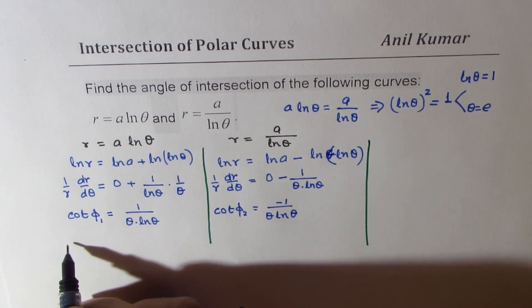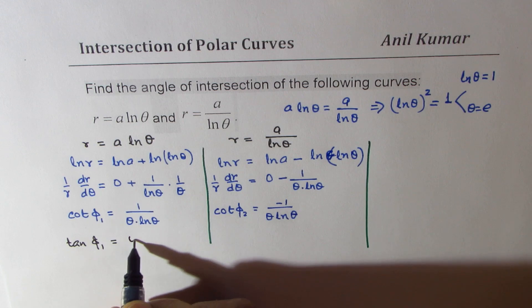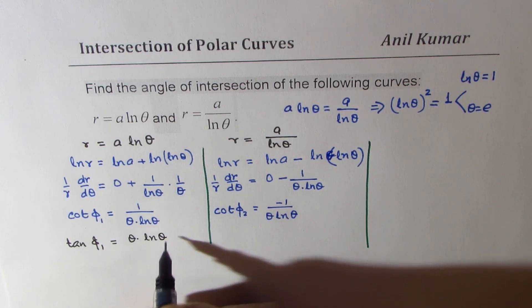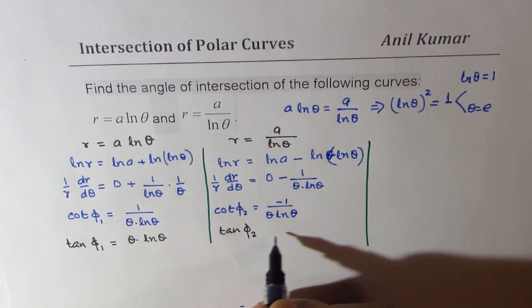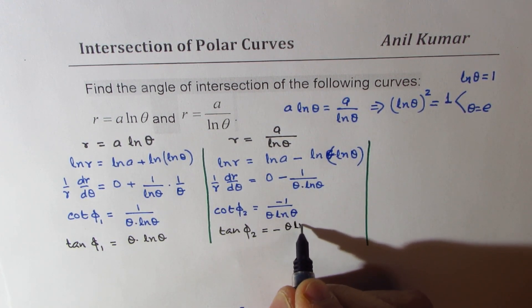So we could write this as tan phi 1 as equal to theta times ln theta and tan phi 2 as equal to minus theta times ln theta.